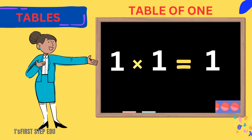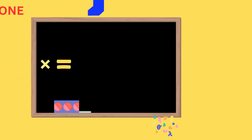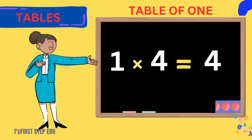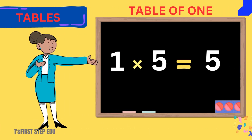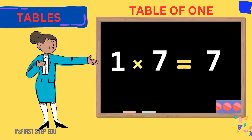1 one is 1. 1 one is 1. 1 two is 2. 1 two is 2. 1 three is 3. 1 three is 3. 1 four is 4. 1 four is 4. 1 five is 5. 1 five is 5. 1 six is 6. 1 six is 6.